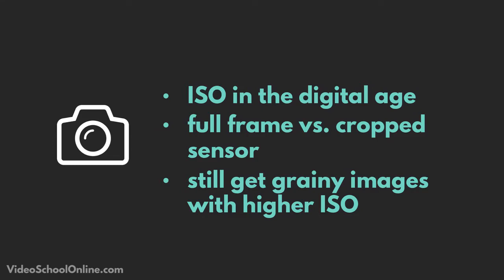As you increase your ISO in the digital age, you still have to worry about grain, just as you did with film — but it's slightly different today because a computer is reproducing an image that isn't actually there, whereas film crystals were reacting to actual light. This is all dependent on the camera you're using and how it reads light, reads grain, and reproduces grain.